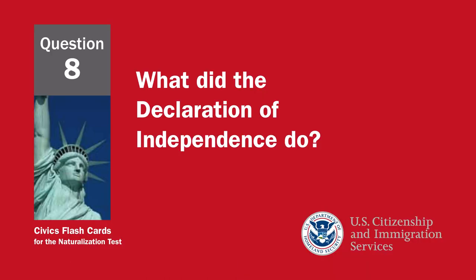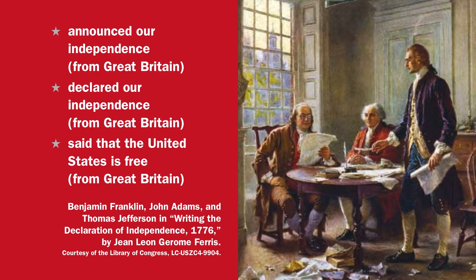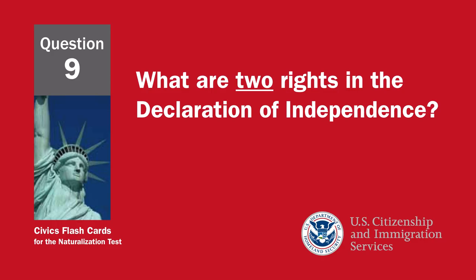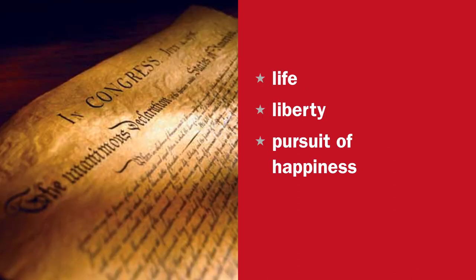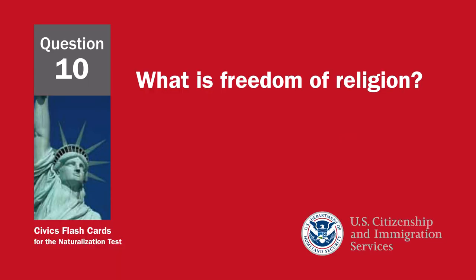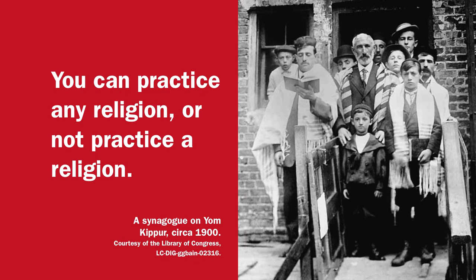What did the Declaration of Independence do? It announced our independence from Great Britain, declared our independence from Great Britain, and said that the United States is free from Great Britain. What are two rights in the Declaration of Independence? Life, liberty, and pursuit of happiness. What is freedom of religion? You can practice any religion or not practice a religion.